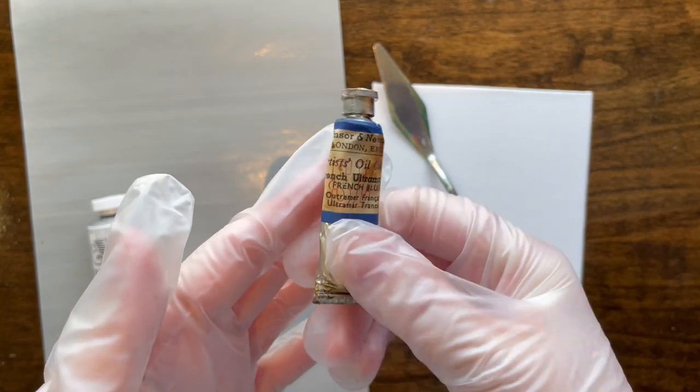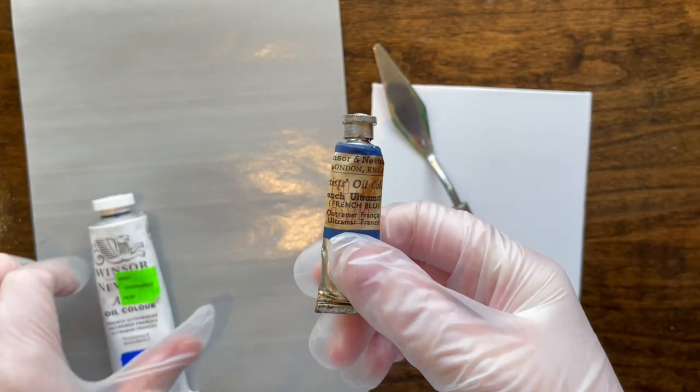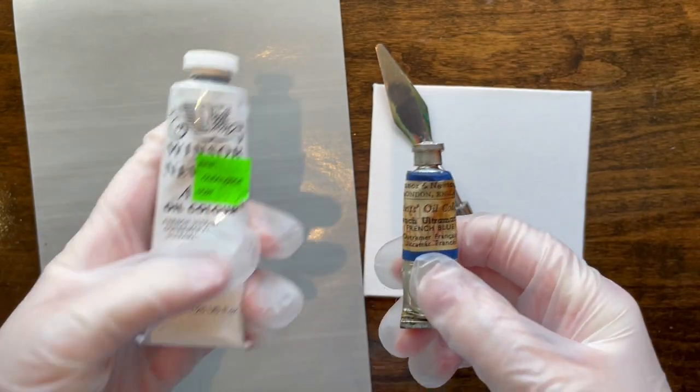When it doesn't say Rathbone Place on it, it means 50s, possibly early 60s. There's a whole conversation about that.